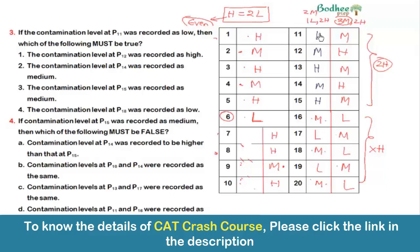Given P11 = L, the only valid assignment for P11–P15 is: L, M, H, M, H. So P13 = H and P14 = M and P15 = H. Option 1 says P12 is high — that's wrong, it's medium. Option 2 says P14 is medium — correct. Option 3 says P15 is medium — wrong, it's high. Option 4 says P18 is low — wrong, it's medium. So Option 2 is the right answer.